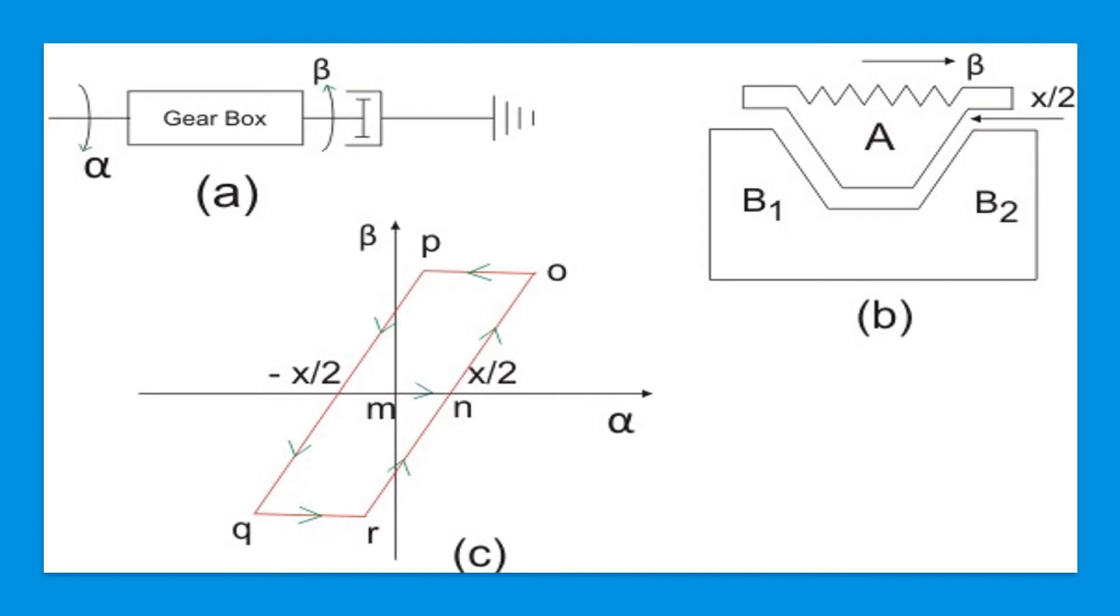As the tooth A is driven clockwise from this position, no output motion takes place until the tooth A makes contact with the tooth B1 of the driven gear after travelling a distance of X/2.